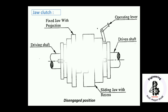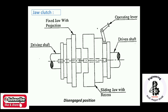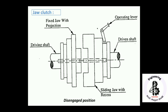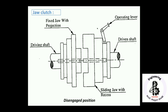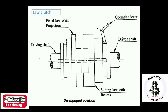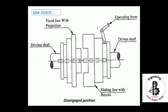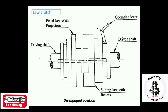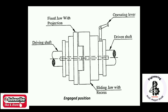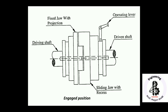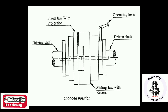Next is the jaw clutch. The disengaged position is shown: on the left side, the driving shaft is connected to a fixed jaw with projections; on the right side, the driven shaft has a sliding jaw with recesses. By application of a lever, the fixed jaw with projections engages with the sliding jaw with recesses. The animated view shows the engagement and disengagement of the jaw clutch, transmitting motion and power from the driving shaft to the driven shaft.